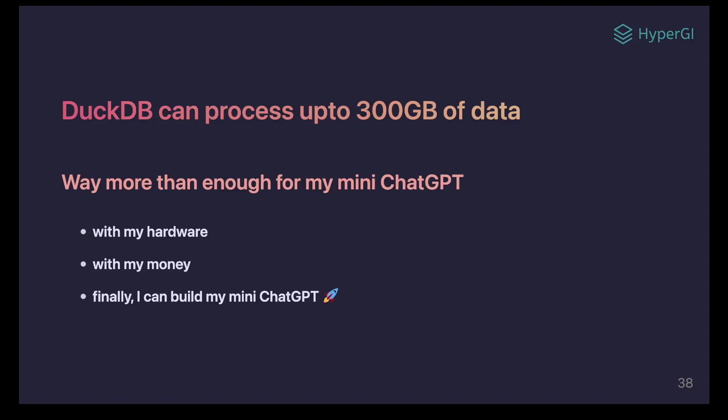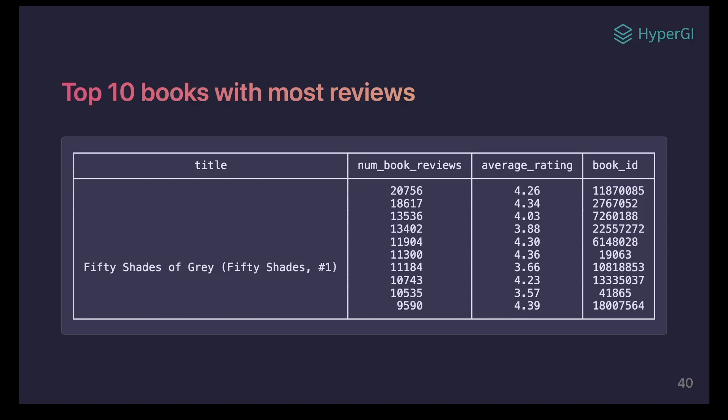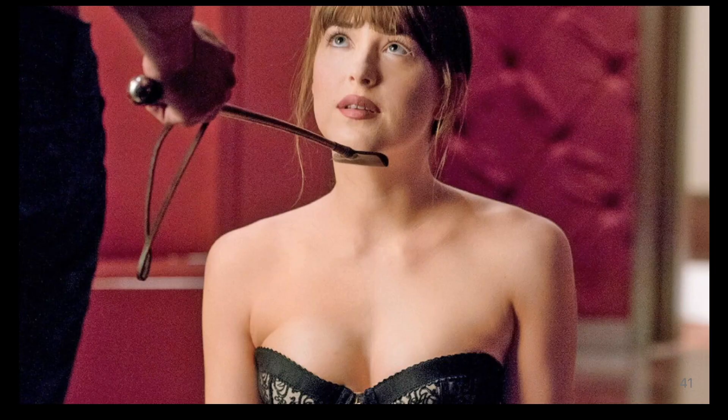After all that hard work, I looked into the data. I checked the top 10 books with the most reviews, and one book got my attention: it's called 50 Shades of Grey. It has more than 100,000 reviews. Maybe I should read this book first before building my mini-GPT model. Anyway, enough talking about 50 Shades of Grey — let's get back to the topic.